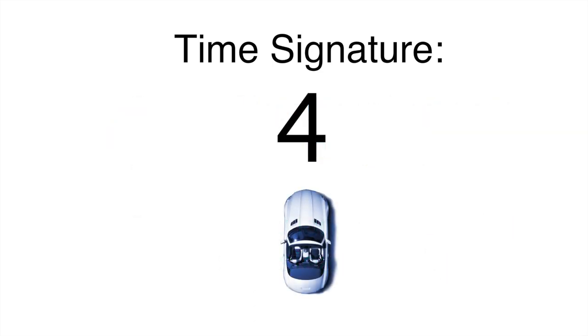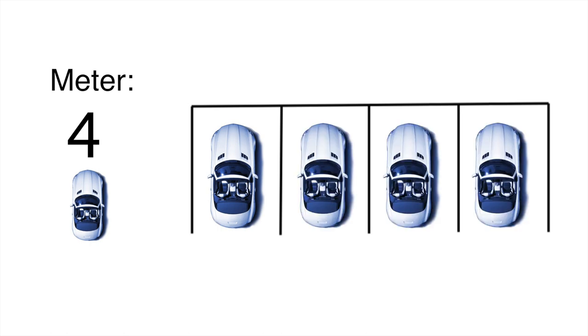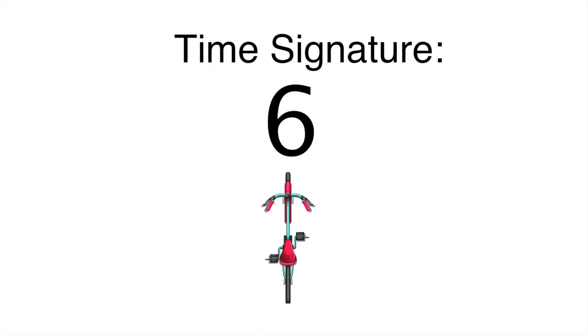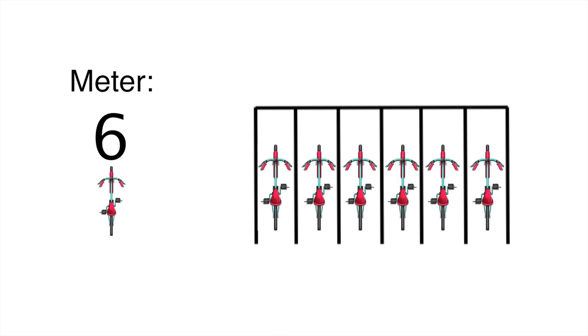For instance, if our time signature had a four on the top and a car on the bottom, that means the meter has four parking spaces in a group, and each space can fit one car — we could put four cars in this group. If our time signature had six on the top and a bicycle on the bottom, the meter has six spaces and each space can fit one bicycle. But we don't really use cars and bicycles in music — we use music notes.